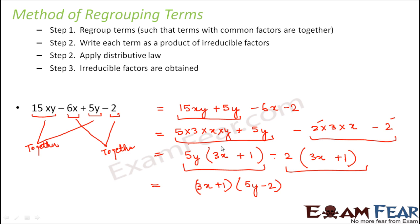We will be left with 5y minus 2. Why? That is because in the first term we have taken 3x plus 1, so what is left? 5y. In the second term we have again taken 3x plus 1, so we are left with 2. So 5y minus 2. So 3x plus 1 into 5y minus 2. This is the factual form of the given algebraic expression.